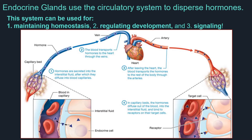Hormones travel from secreting tissues to the target cells using our circulatory system. Diffusion of hormones down their concentration gradient will gain them access into capillaries, and then they flow with the blood back to the heart. From there the hormones can gain access to the rest of the body, enabling our endocrine system to actively communicate and regulate tissues throughout our entire bodies.